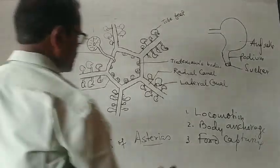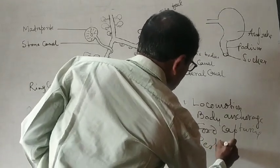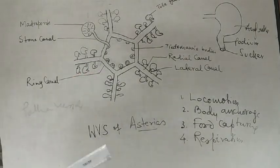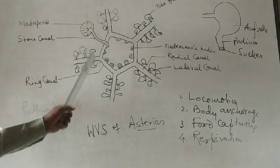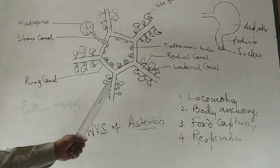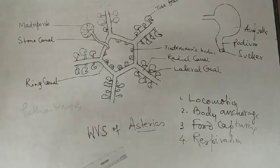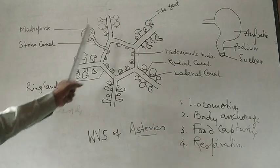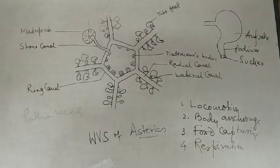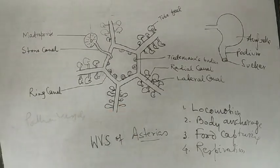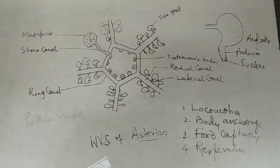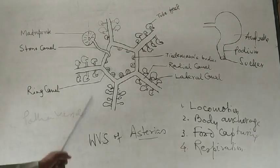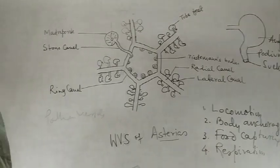Another function is respiration. That means, when the fluid passes through that canal, which contains oxygen, that dissolved oxygen helps in the respiration, which diffuses in the body by the process of diffusion. So, in that way, we are observing here that there is a very unique system of echinoderms, by which they perform such type of functions to maintain their life. This is water vascular system, a very special, unique characteristic feature of the echinoderms.